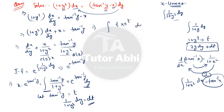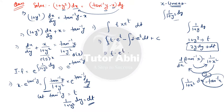To evaluate ∫ t · eᵗ dt, we apply integration by parts: ∫ t · eᵗ dt = t · eᵗ − ∫ 1 · eᵗ dt = t · eᵗ − eᵗ + C, since the differentiation of t with respect to t is 1.